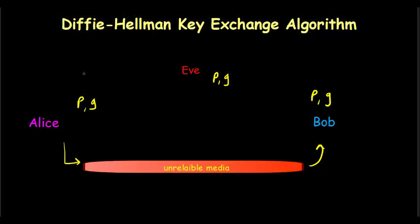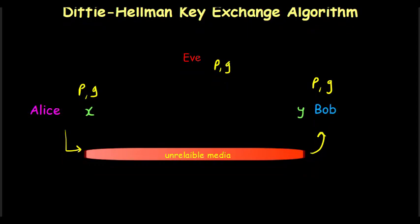Next, Alice takes a private number X which is not shared with anyone. Similarly, Bob uses a private number Y which only Bob knows. Using these three pieces of information — P, G, and her private number X — Alice calculates a value R1.